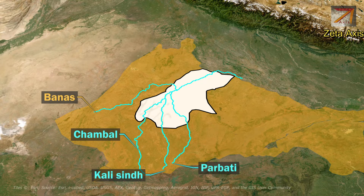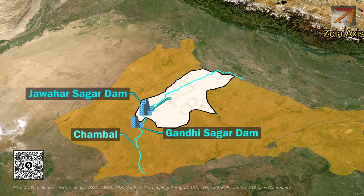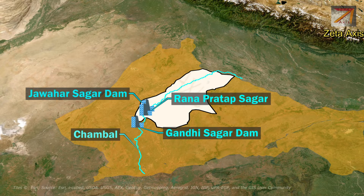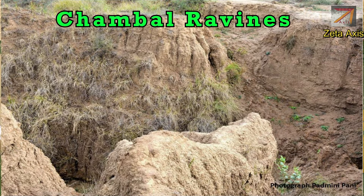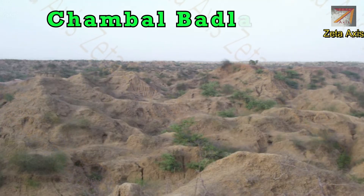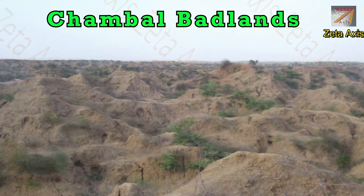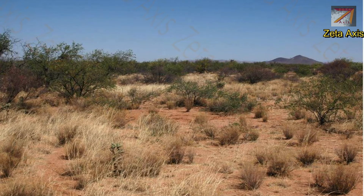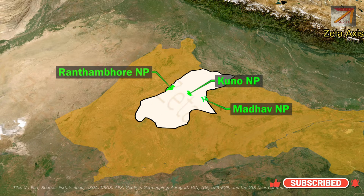A series of dams are built on the Chambal River in Madhya Bharat Pathar, including Gandhi Sagar, Jawahar Sagar, and Rana Pratap Sagar. The water from these dams is used to irrigate the land. In the northern part, through which the Chambal River flows, numerous ravines have been formed through erosion — these are called Chambal Badlands. The badlands are created by extensive vertical erosion of softer sedimentary rocks, creating steep slopes that support minimal vegetation. Grasslands are common with very few trees and scrubs. Ranthambore National Park, Kuno National Park, and Madhav National Park are located in Madhya Bharat Pathar.